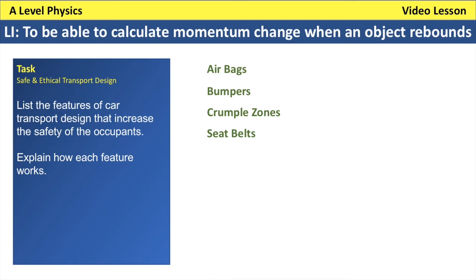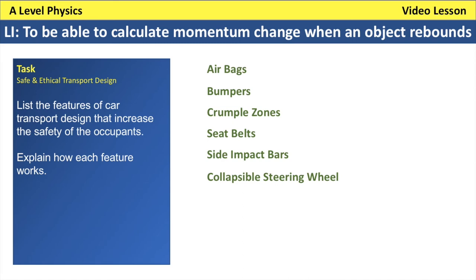Seat belts restrain the occupant from crashing into the vehicle frame after the vehicle suddenly stops, stopping the wearer more gradually and with less force than an unrestrained impact. Seat belts need replacing after a crash. Side impact bars deform when struck from the side, increasing impact time and reducing force. A collapsible steering wheel similarly lessens the impact force on the driver in a front-end collision by collapsing on contact.